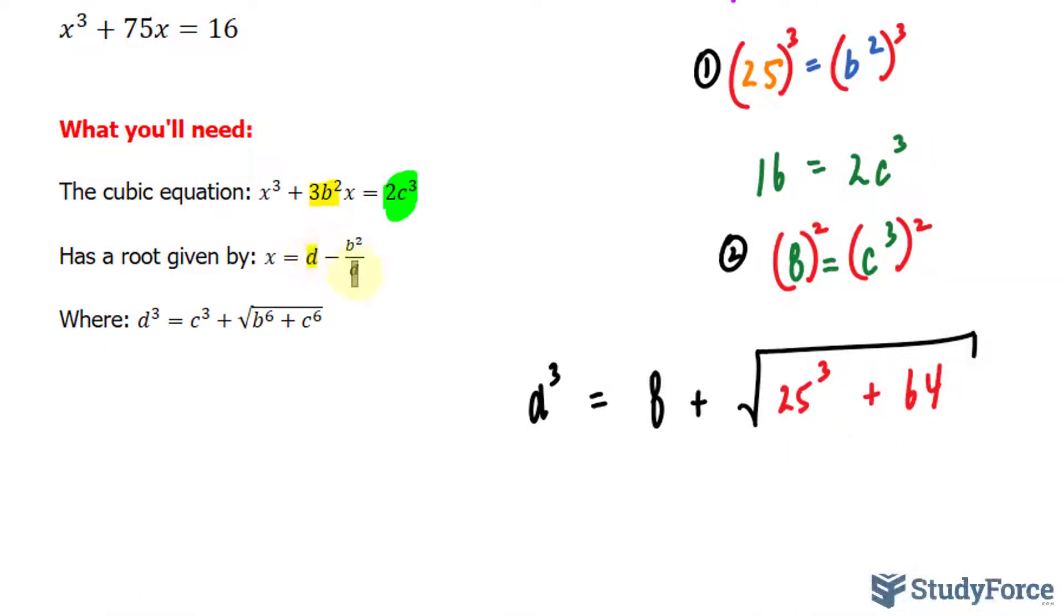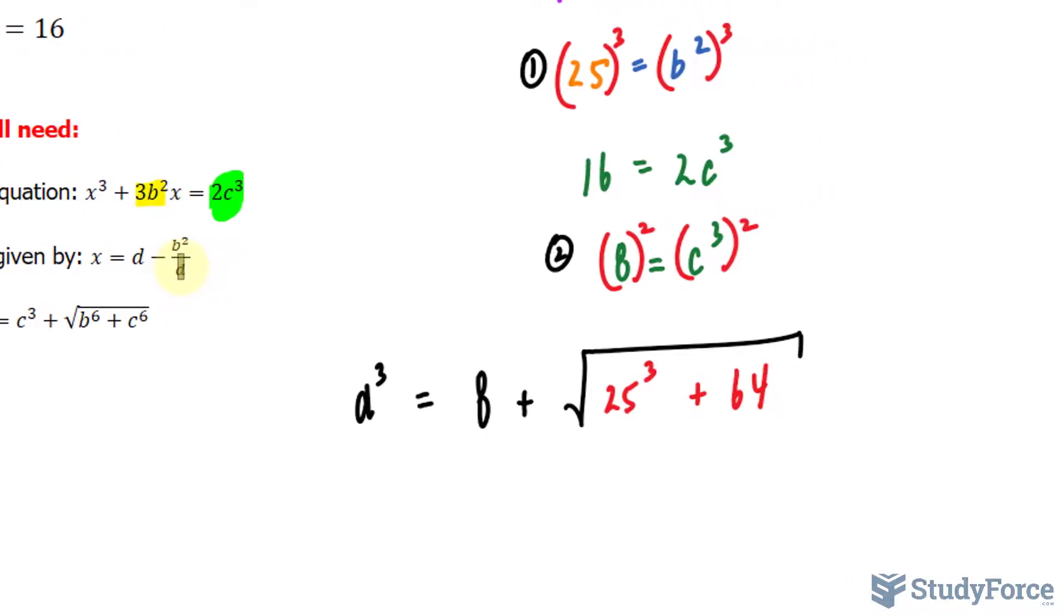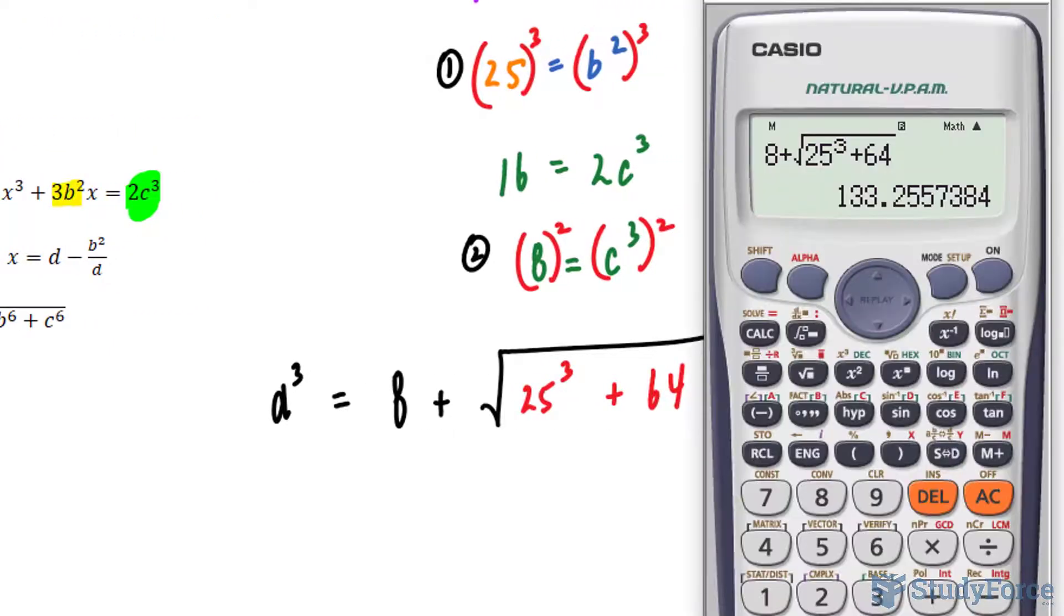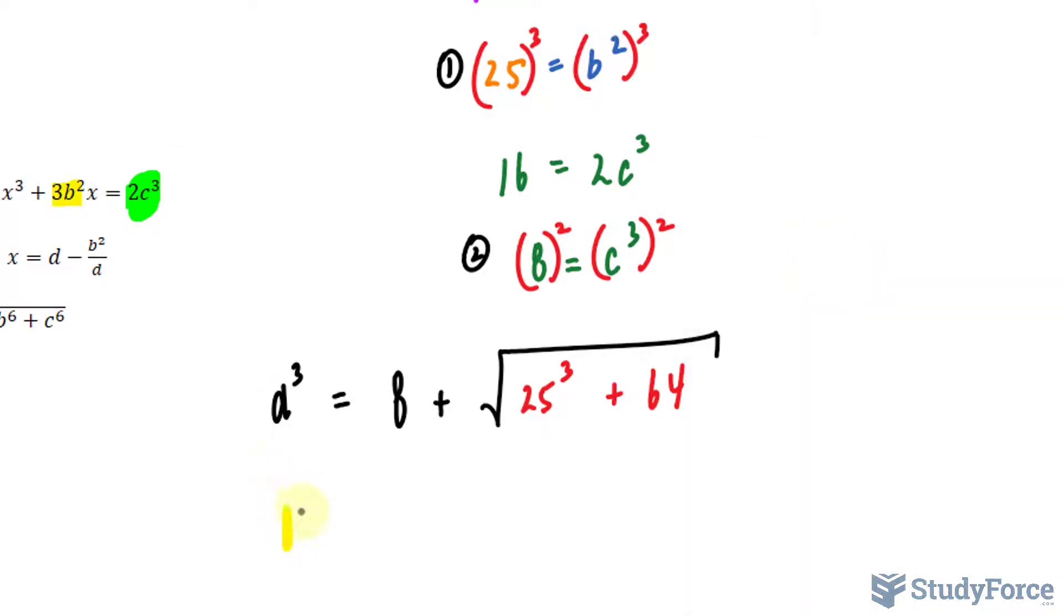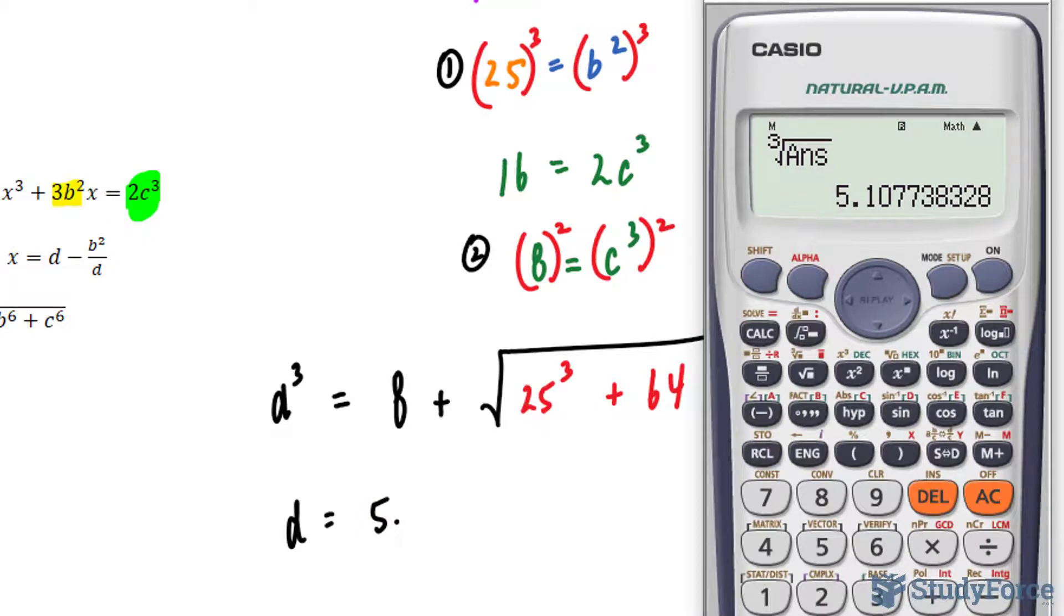So I need to cube root this so that I have d isolated, and then I can eventually place it into here. So let's use our calculator to cube root this. We end up with a d value that is 5.110. And I like to write down all the numbers after the decimal place just to prevent any rounding errors. So d = 5.107738.